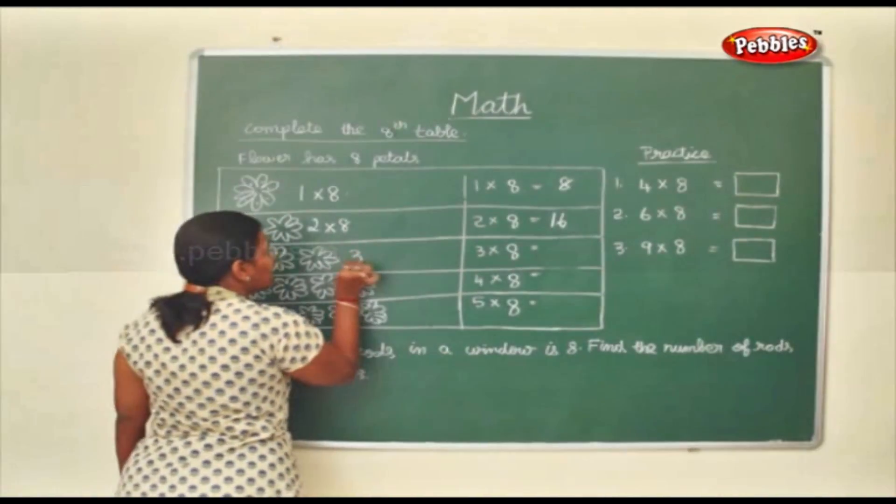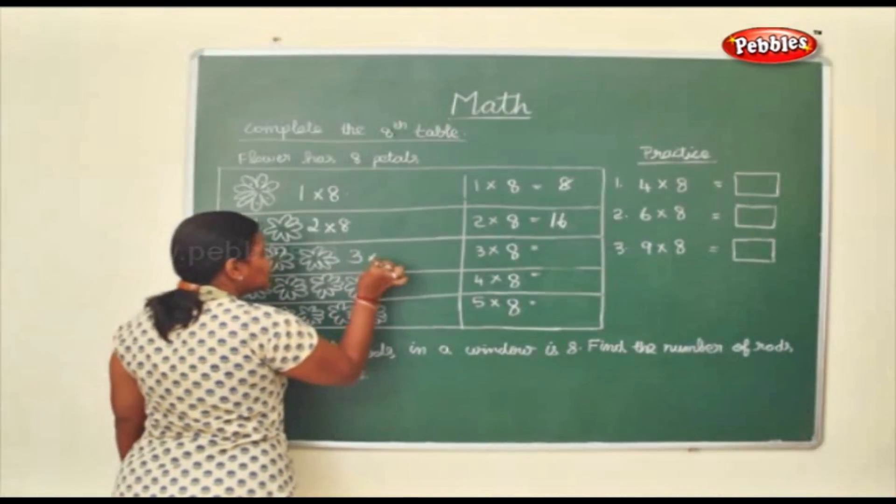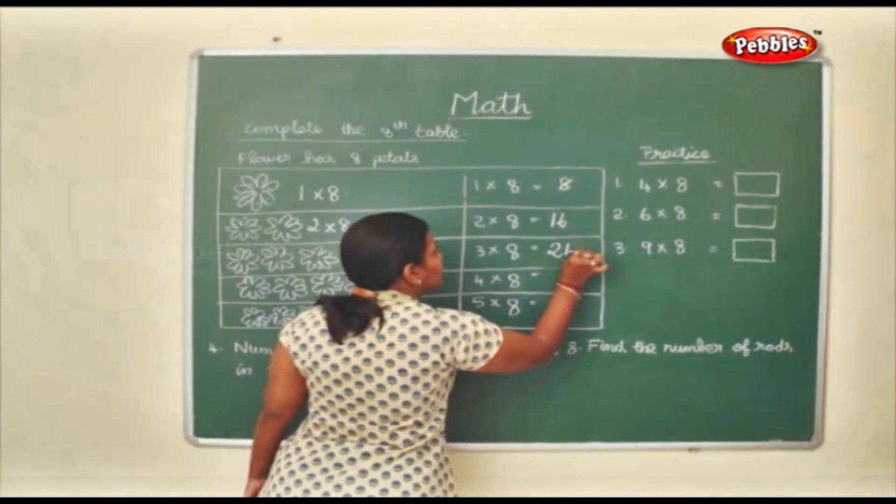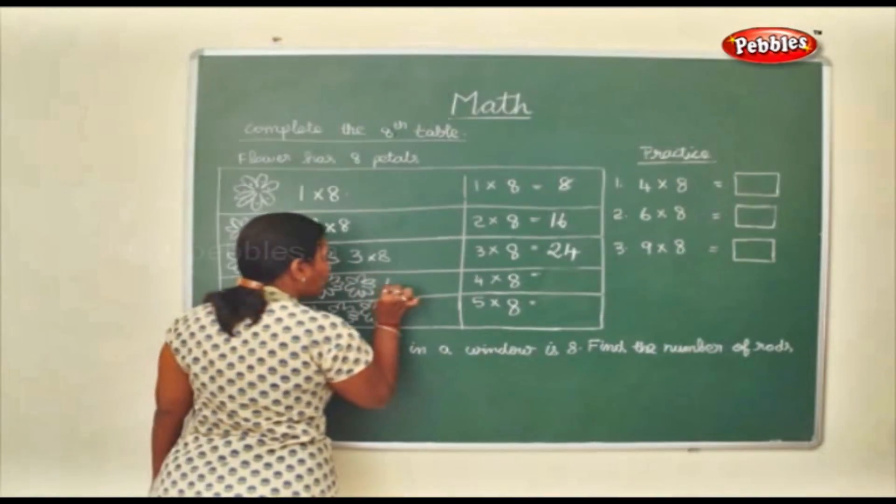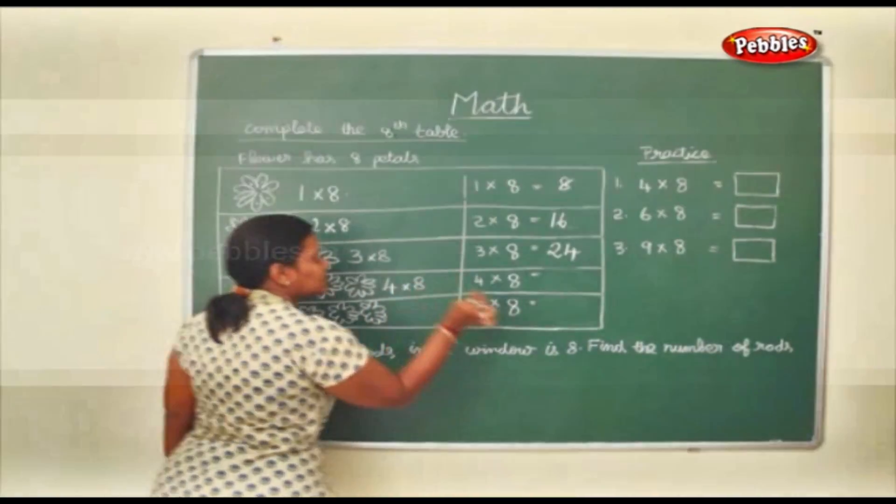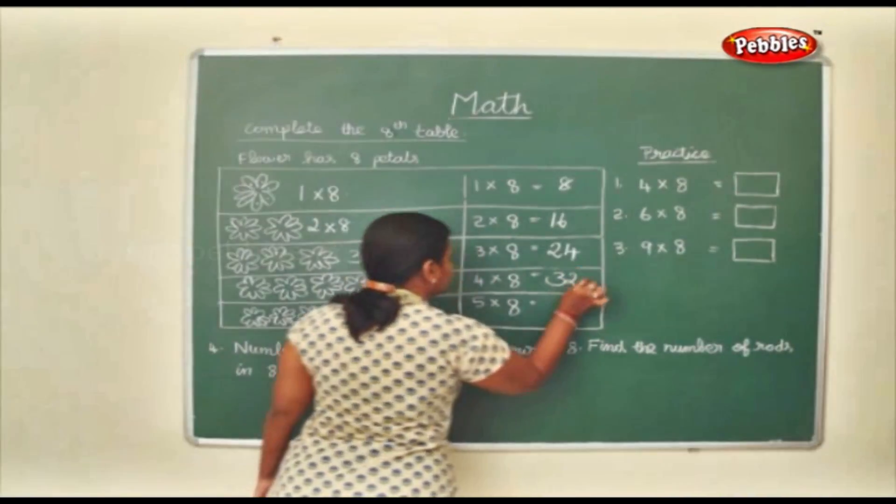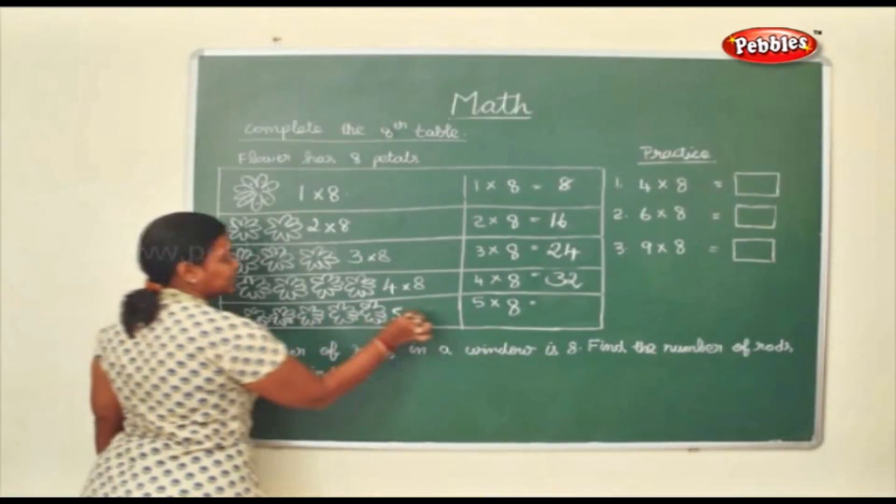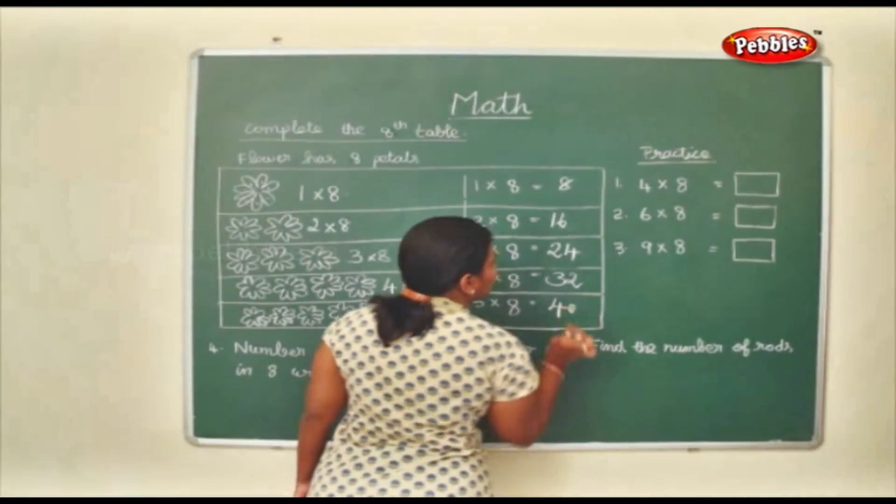Now here you have 3 flowers. So 3 into 8 petals. 24. Now 1, 2, 3, 4. 4 into 8 petals in each flower. So 8, 4 is 32. Now 5 into 8 petals. So you will have 40 petals together.